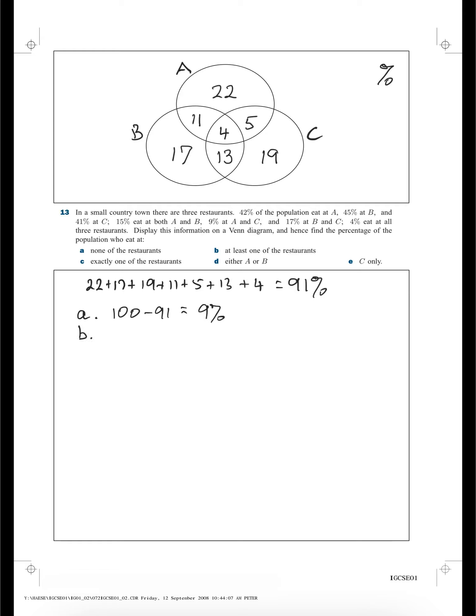Question B, at least one of the restaurants. Well, that would be this number here. At least one could be two or three. So that's going to be 91%.